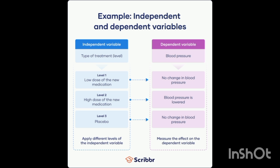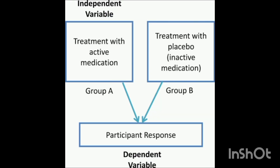The independent variable is the type of treatment — it could be medicine, lifestyle changes, the foods you are taking, drips, or any surgery. The dependent variable is blood pressure. The more care you give, the more the blood pressure will be controlled.